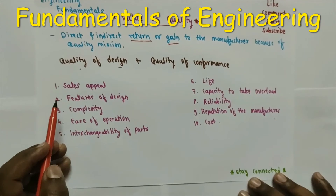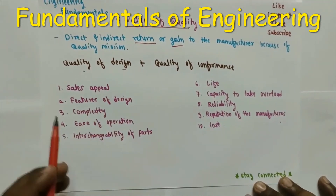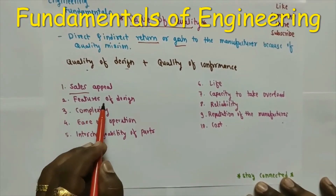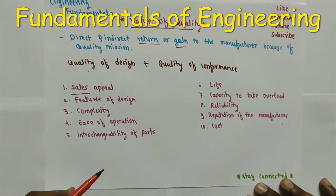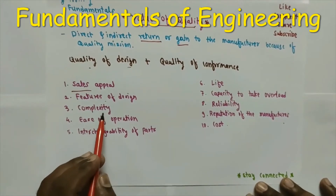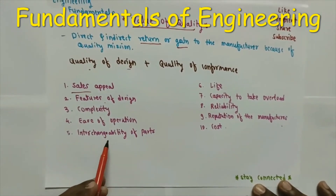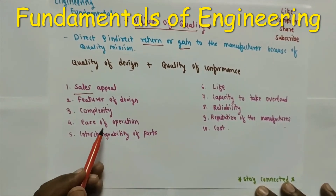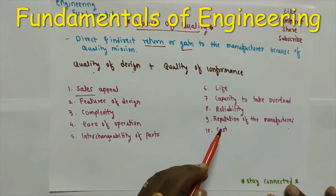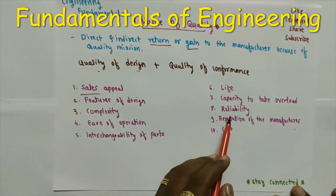Unlike cost of quality, which can be measured quantitatively, the value of quality cannot be measured directly — it is estimated through features. These features include: increase in sales, features of design provided with the product, simplicity and reduction in complexity, ease of operation, interchangeability of parts, and the life of the product — how long it operates satisfactorily. As product life increases, the value of the product and value of quality increase.